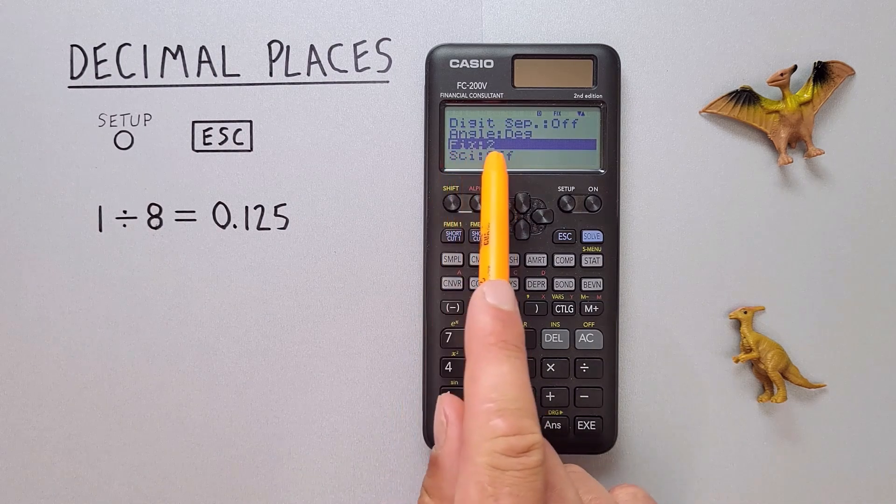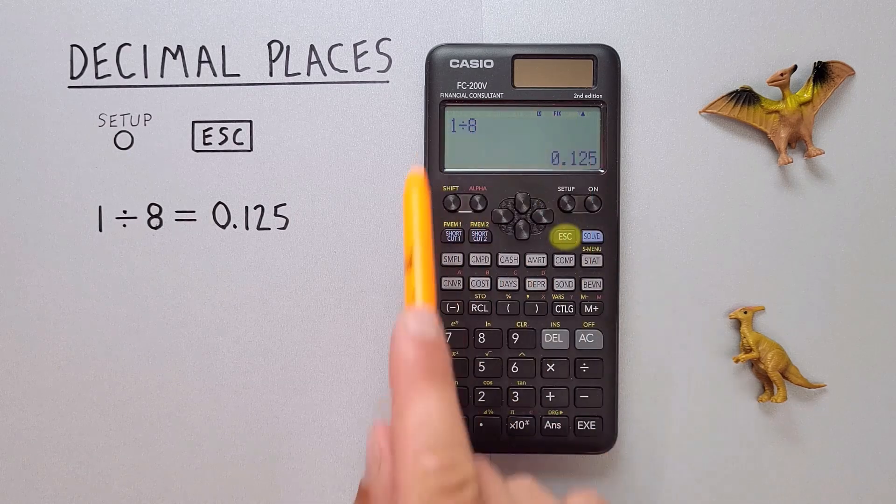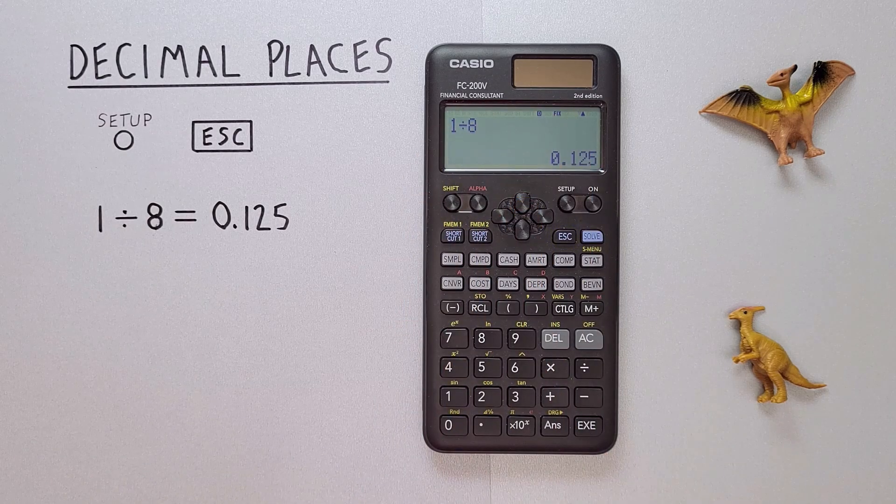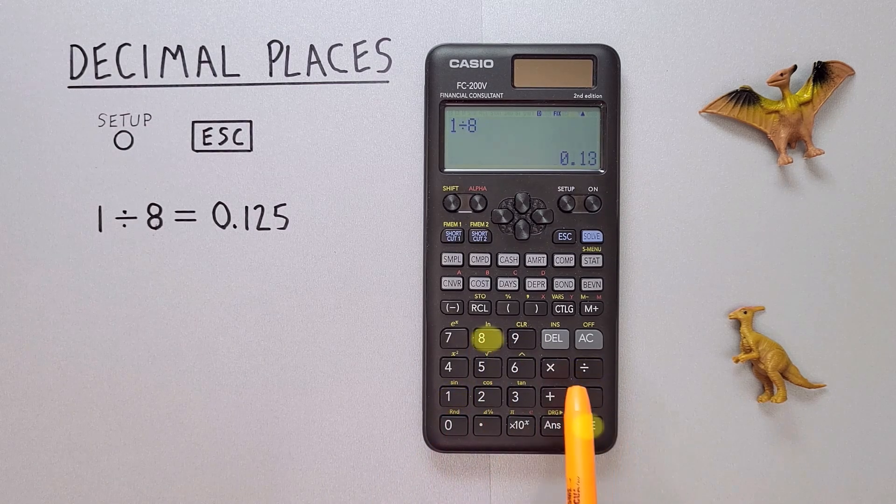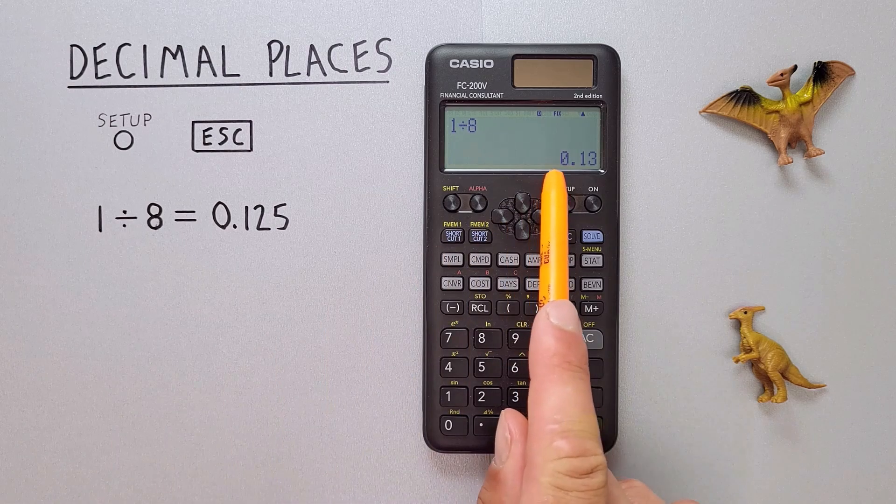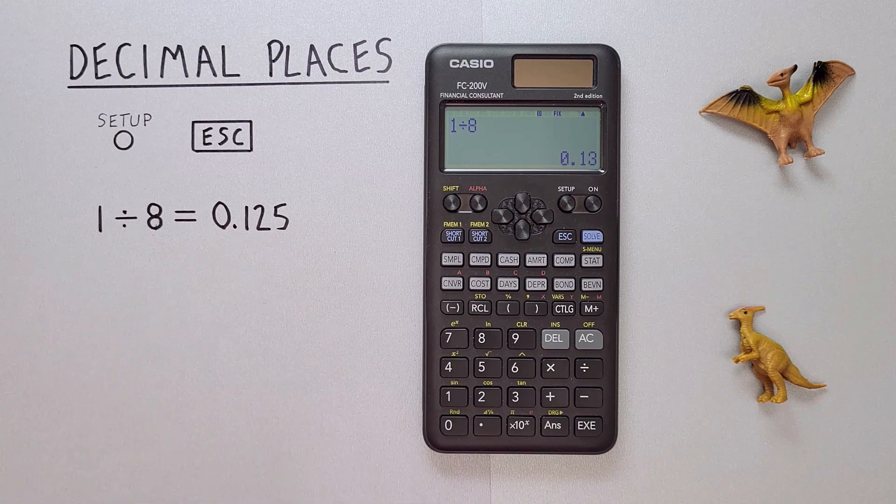It now says Fix 2 and if we hit Escape it brings us back to our main screen and now we can go 1 divided by 8 equals and we get 0.13 because our result has been rounded up to two decimal places.